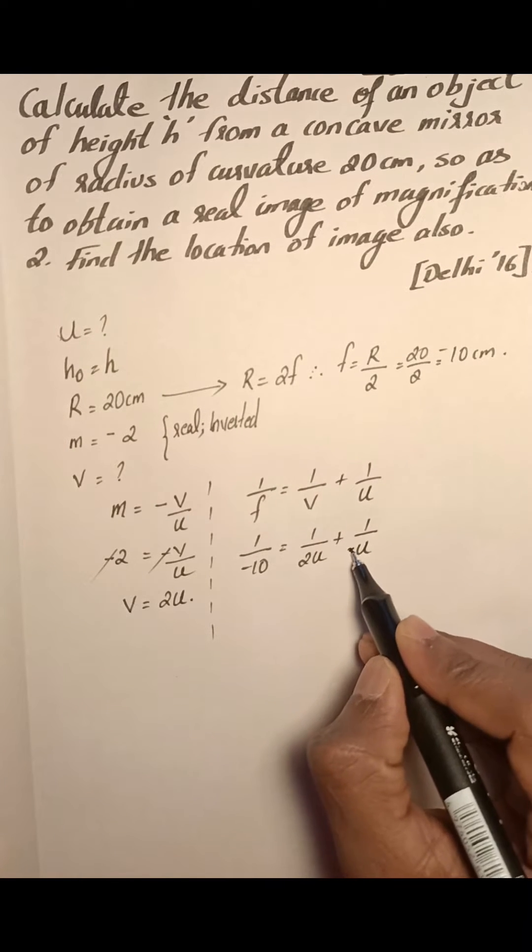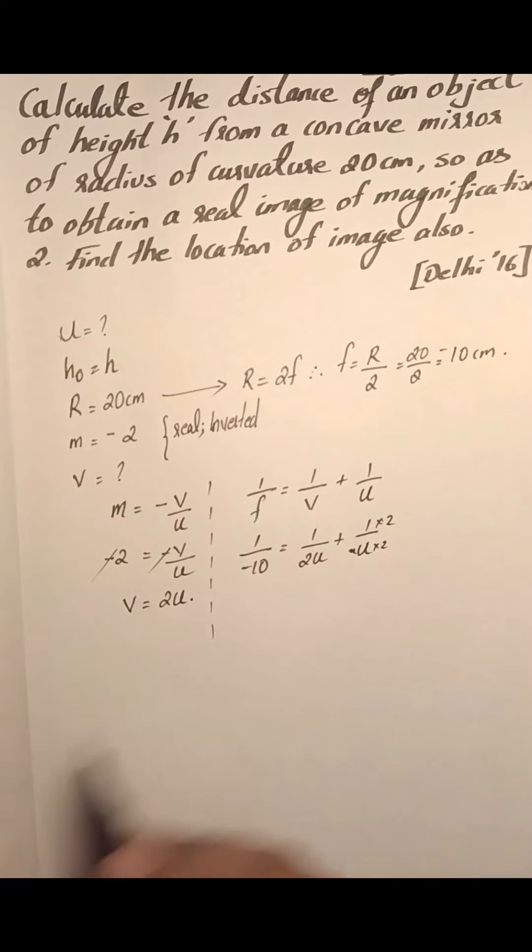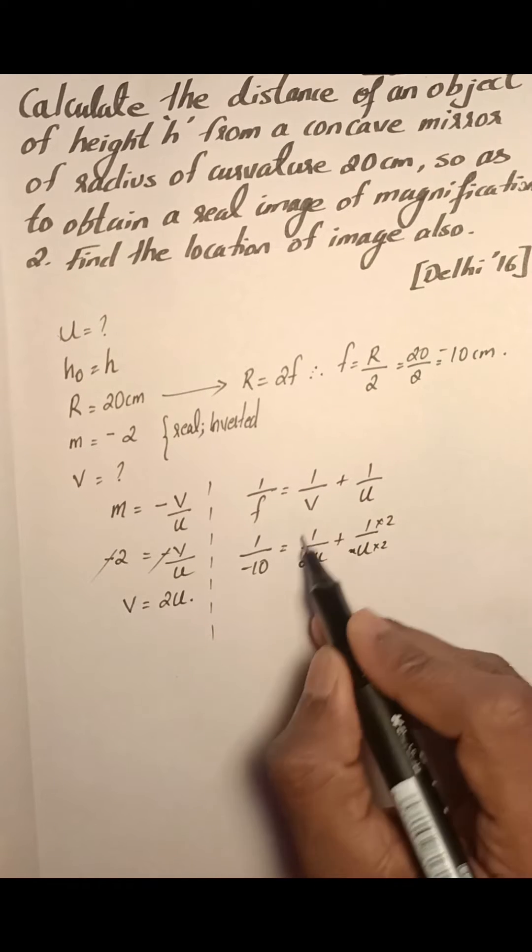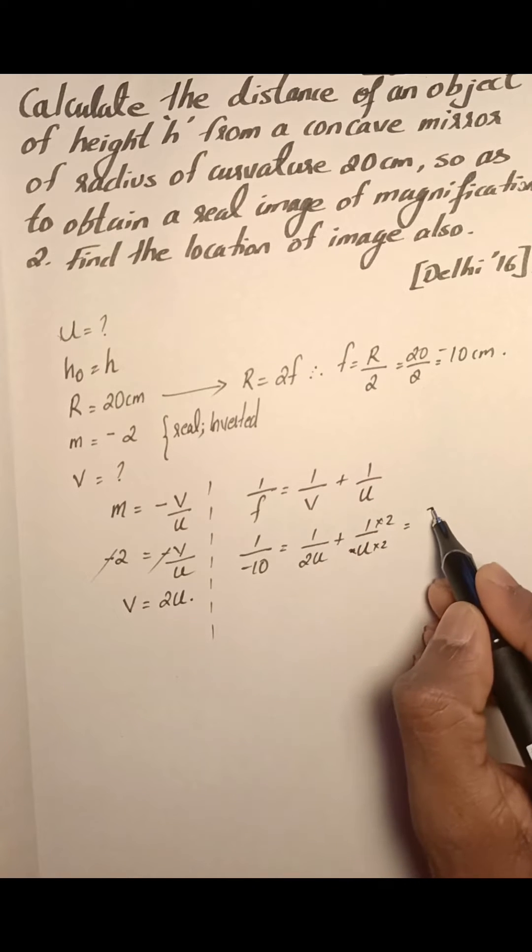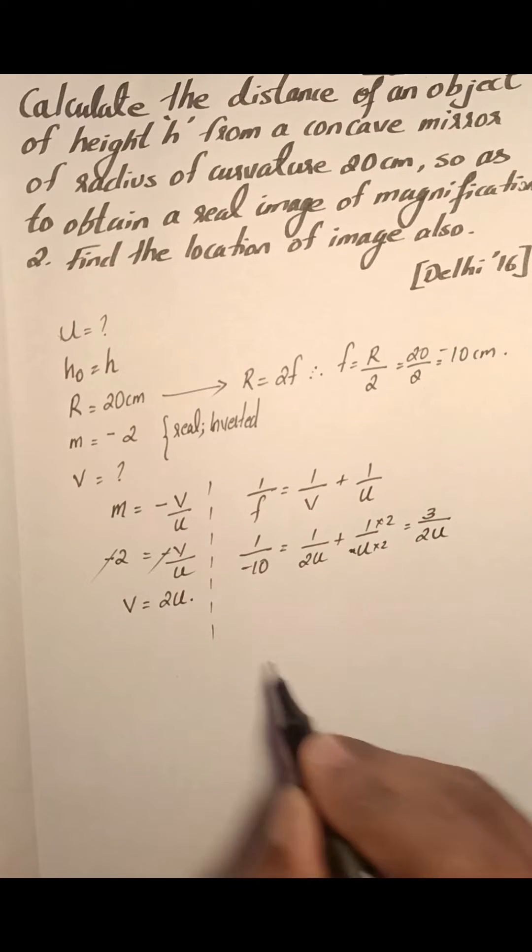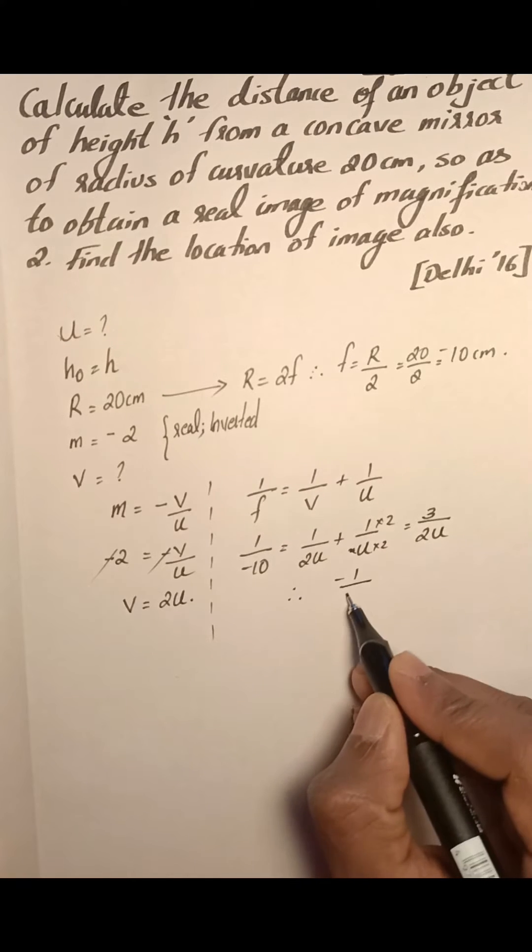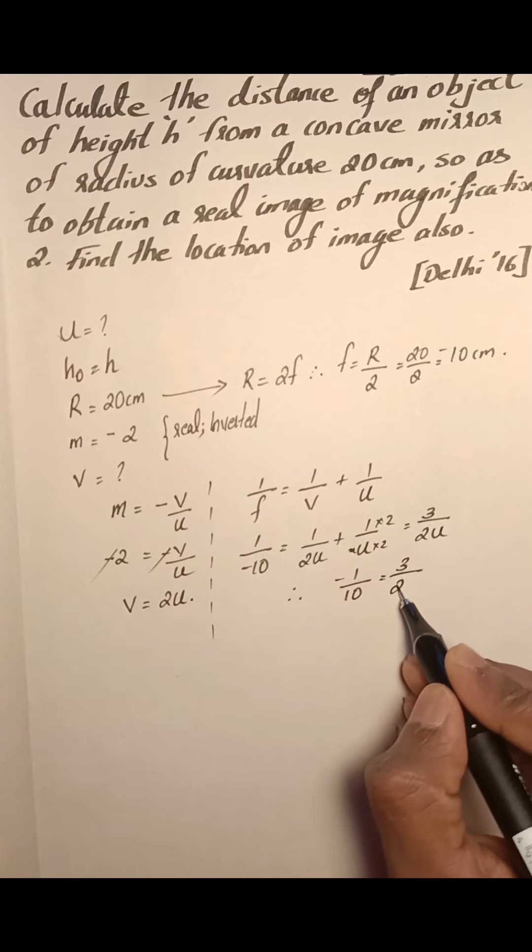We will make these denominators the same by multiplying by 2. So it becomes 2u and 2u. We can add the numerators. 1 times 2 is 2, 2 plus 1 is 3 divided by the common denominator 2u. Therefore, minus 1 by 10 equals 3 by 2u.